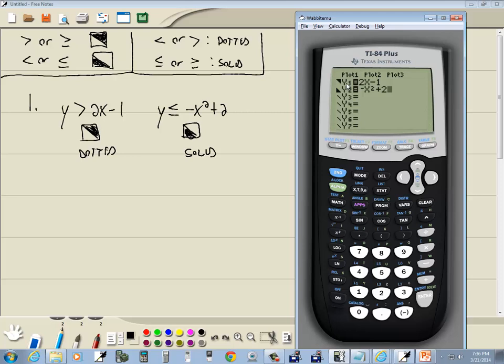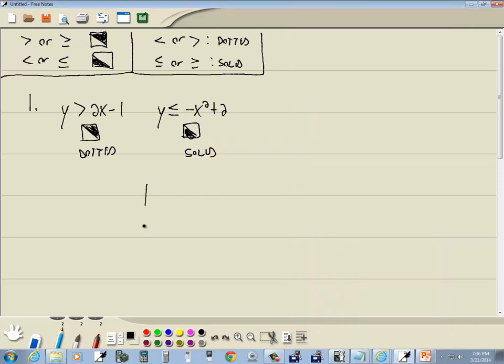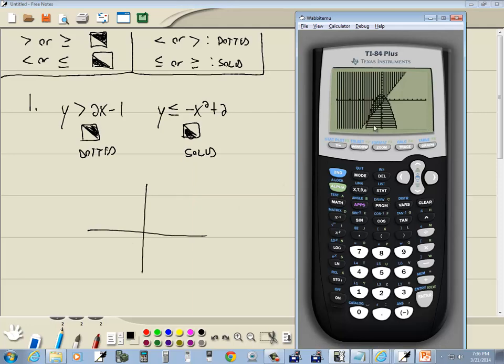Now as we graph this, it'll graph y1 first and then it'll graph y2 second. That'll be important because the line that goes with the y1 has to be dotted and the other one has to be solid. So let's press graph. Okay, there's my dotted one. And there's my solid one. Now our answer is where they are both shaded. So let's see, I said this is dotted.